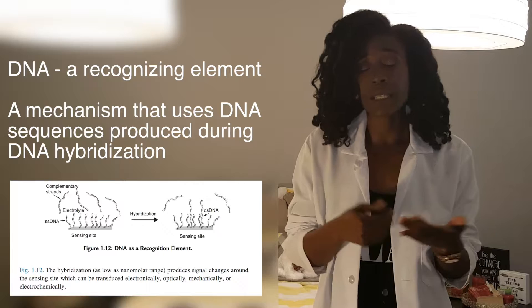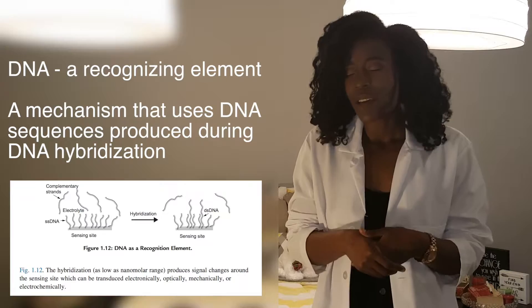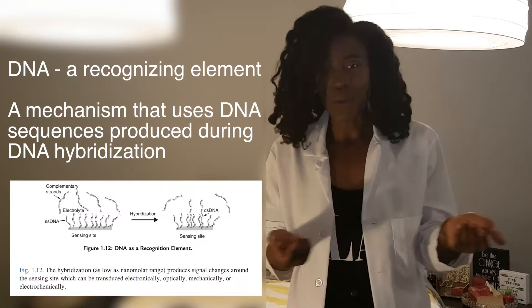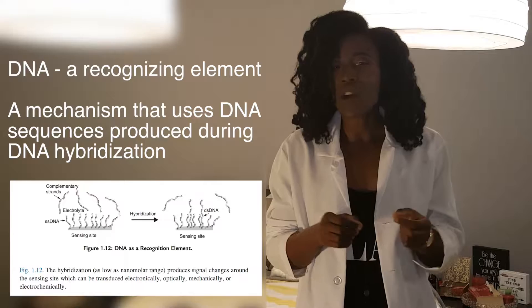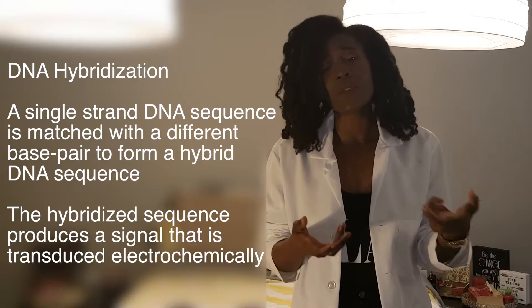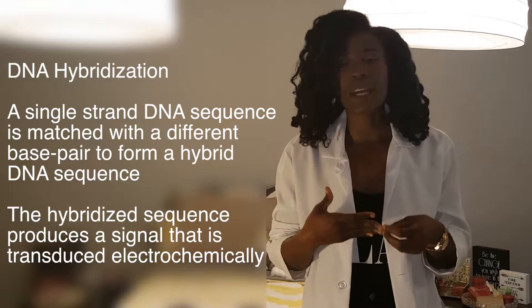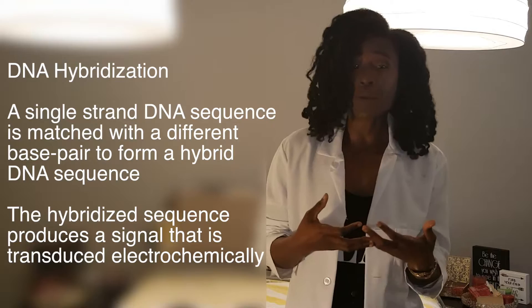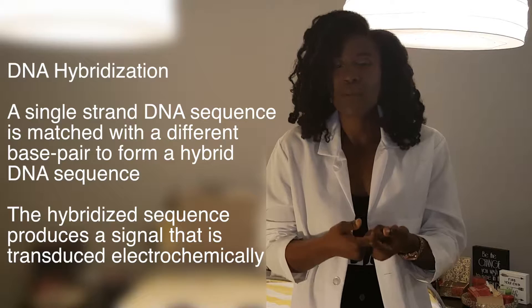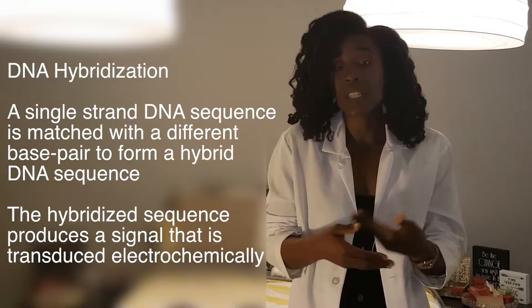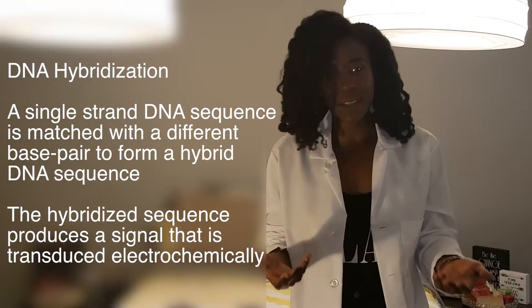The second mechanism a sensor can use to capture and recognize an element is using DNA as a recognizing agent. This mechanism uses DNA sequences through a process called DNA hybridization — using a single-strand DNA and matching it to a different base pair to make a hybridized DNA sequence. This hybridized DNA sequence generates electrical signals that get transduced to identify the specific strand of DNA and use it as a diagnosis for viruses or diseases.